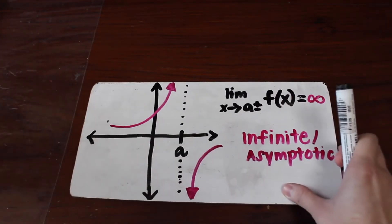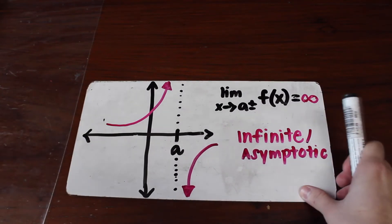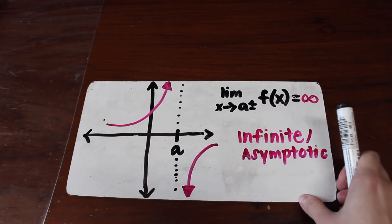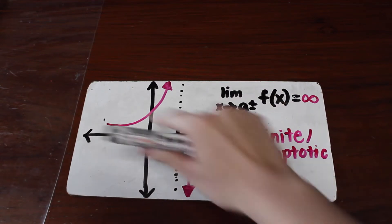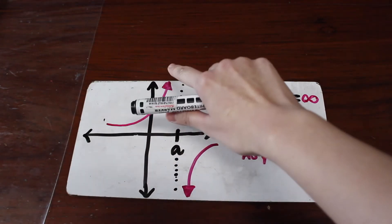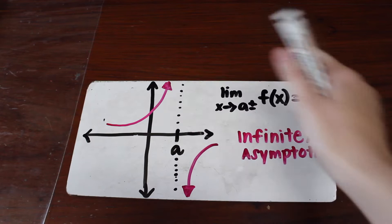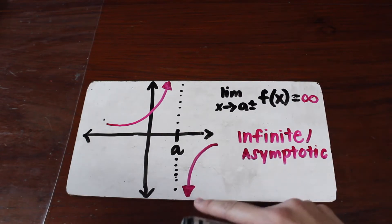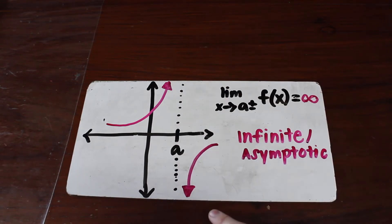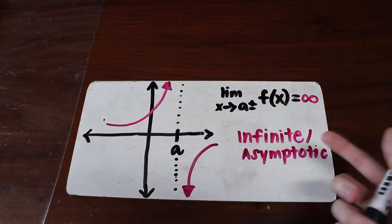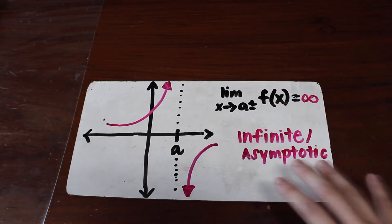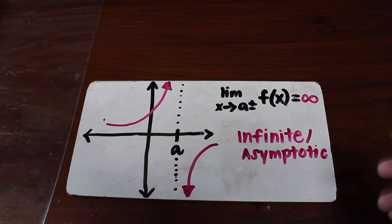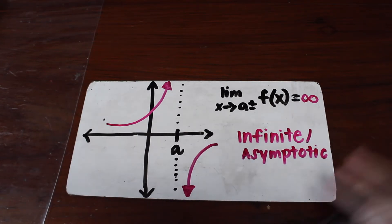The last type is the infinite or asymptotic discontinuity. Notice that as x approaches a from the left, it spikes up to infinity, and as x approaches a from the right, it spikes down to infinity. So the limit does not exist since it is approaching infinity. Therefore, it is an infinite or asymptotic discontinuity.